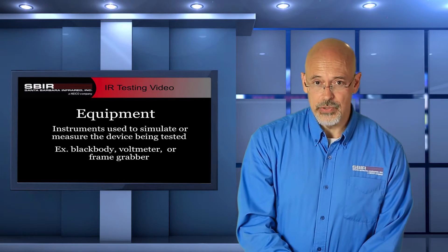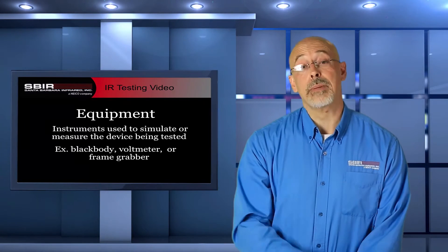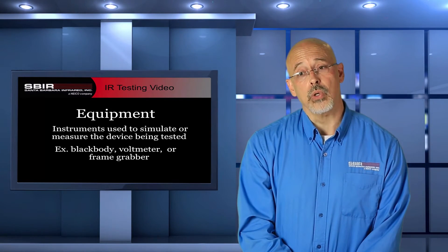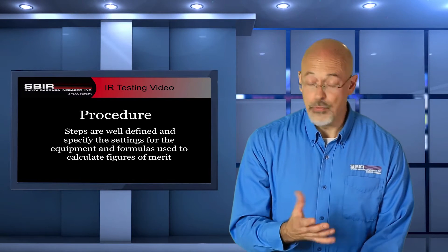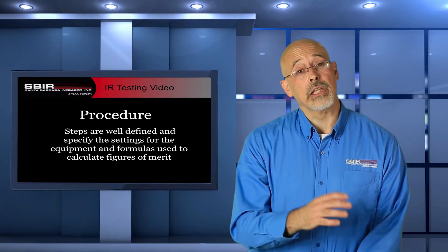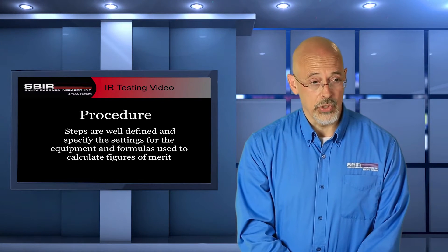Some examples used in infrared testing are a blackbody, a voltmeter, or some sort of a frame grabber from your imager. The procedure should be a series of steps that are well-defined and laid out so that anyone who performs the test knows exactly what they're doing and performs them in the same order, so you get reliable and repeatable results. Usually the formulas used for calculating those figures of merit will be included in the procedure as well.